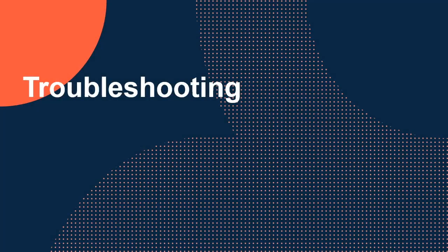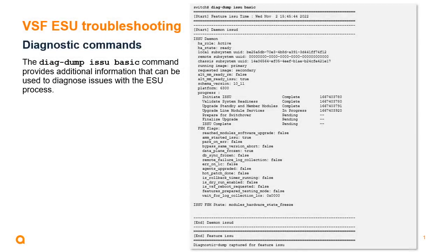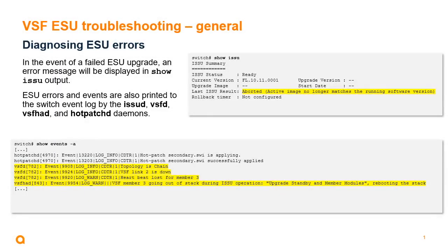For troubleshooting, there are two main show commands: show ISSU, which displays a summary of overall upgrade status and a progress chart of the current or most recent upgrade, and show ISSU brief, which displays only the top summary section. The diagdump ISSU basic diagnostic command will generate more detailed system information that can be used by Aruba support and software engineers. ESU-related errors and events are also generated in the switch event log by the ISSU, VSF, VSF high availability, and hot patch system daemons, and can be displayed using the show events command.